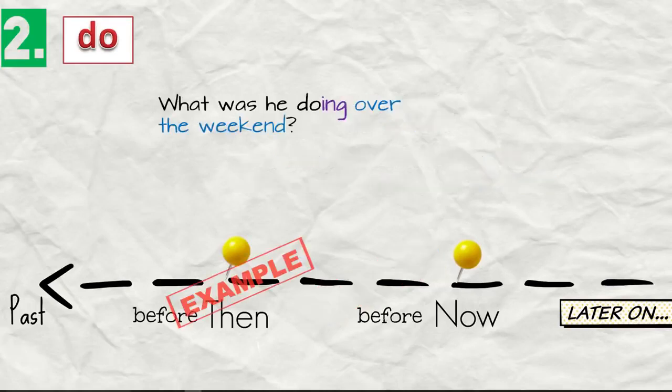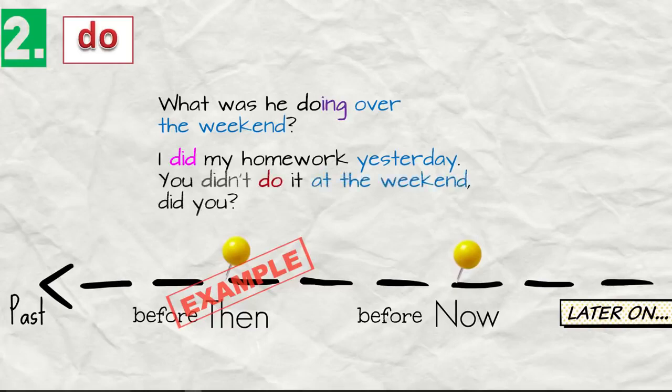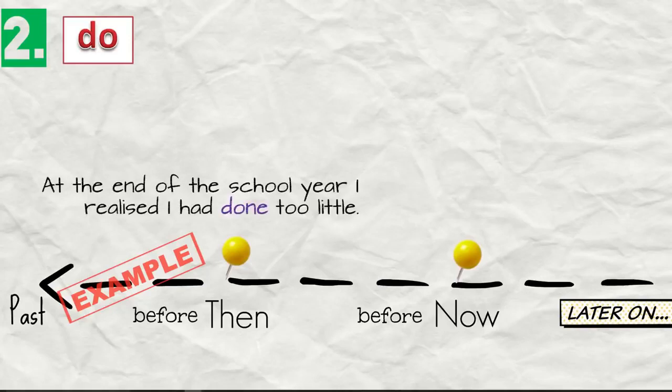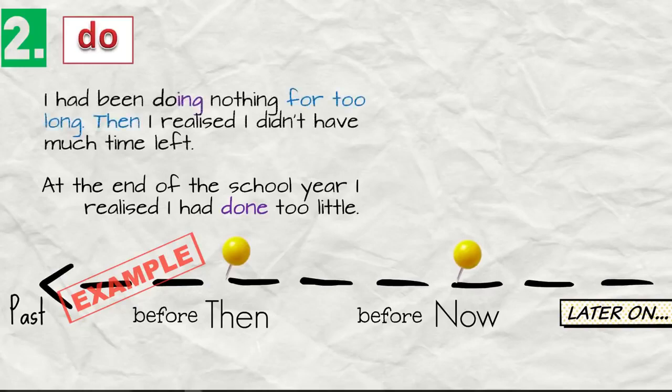What was he doing over the weekend? I did my homework yesterday. You didn't do it at the weekend, did you? He did nothing last weekend. And before then, examples. At the end of the school year, I realized I had done too little. I had been doing nothing for too long. Then I realized I didn't have much time left.